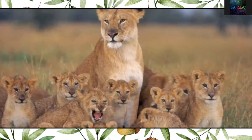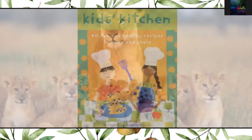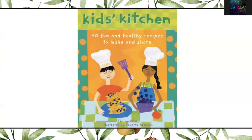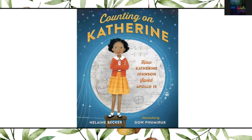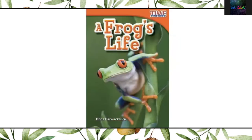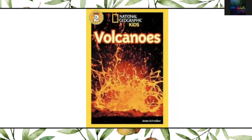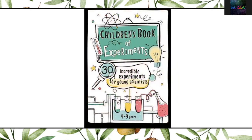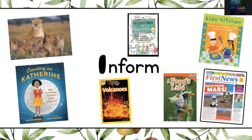Do you know what this topic is about? It's about lions. Recipes or how-to books can also be considered informative. Biographies and books about people are also books that inform us. Newspapers and magazines also inform us about topics. There are also non-fiction books about specific topics like volcanoes, and children's books of science experiments are informative books too. Those are all the different types of informing that an author can choose to do.